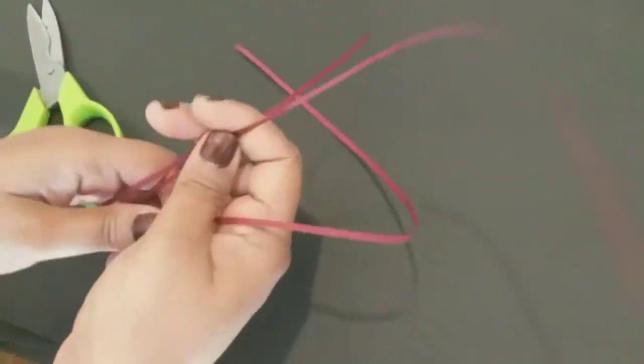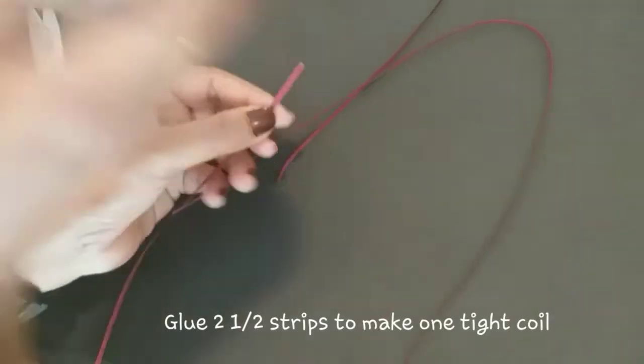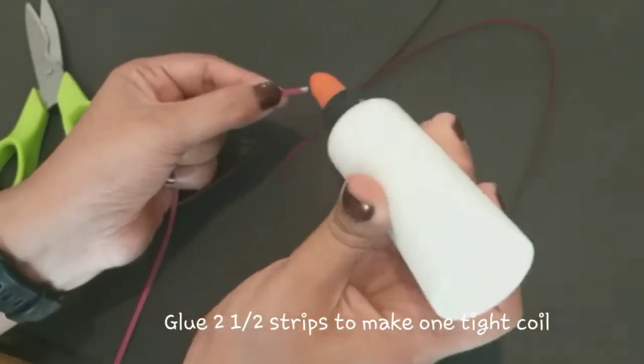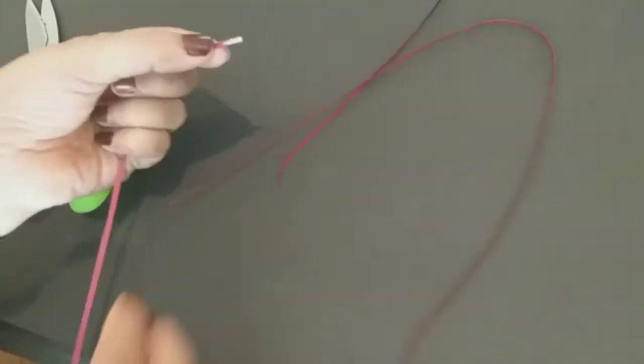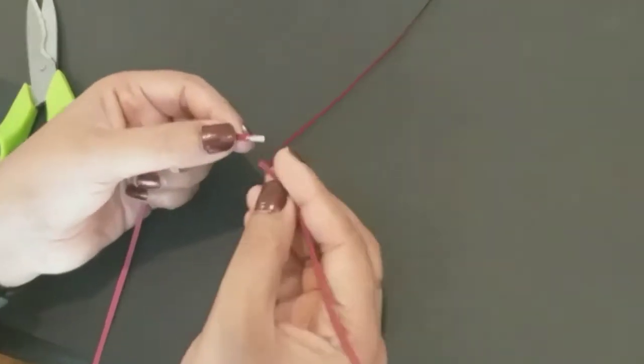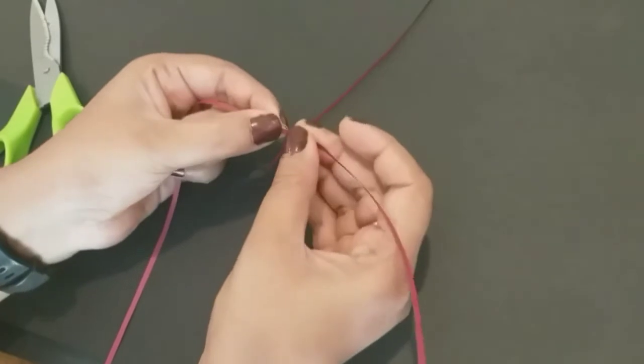We are going to cut off the strips. We are going to make a tight coil. We are going to glue the strips.